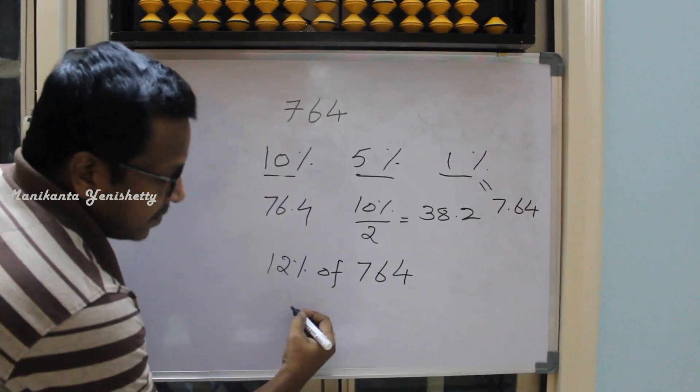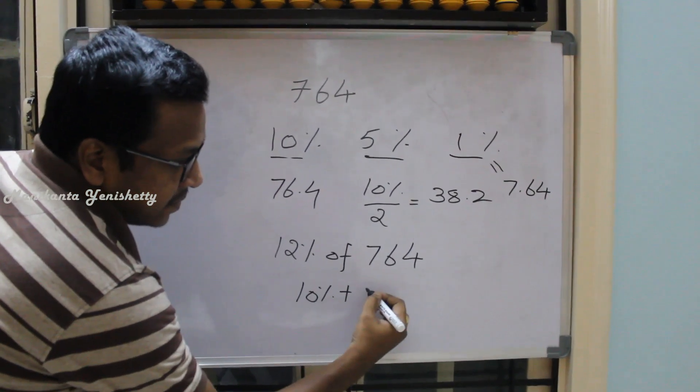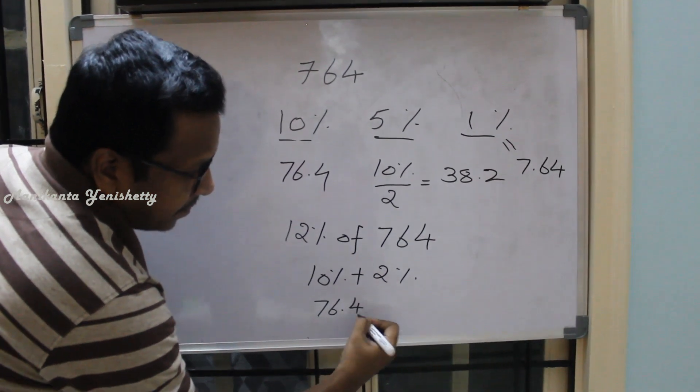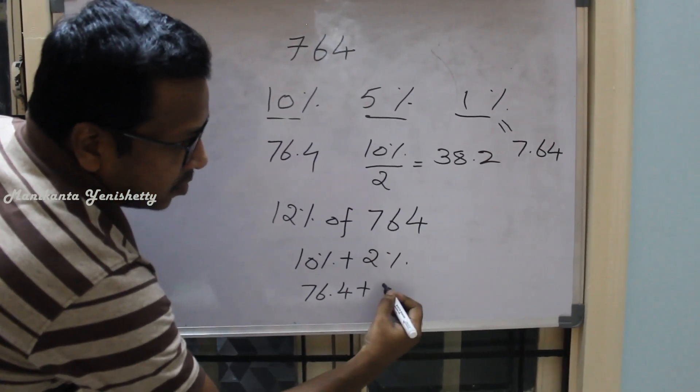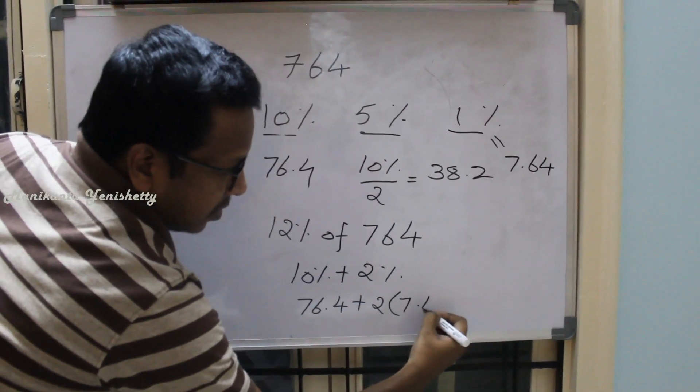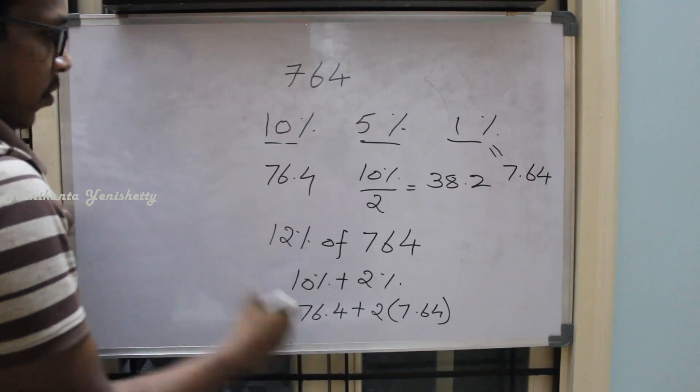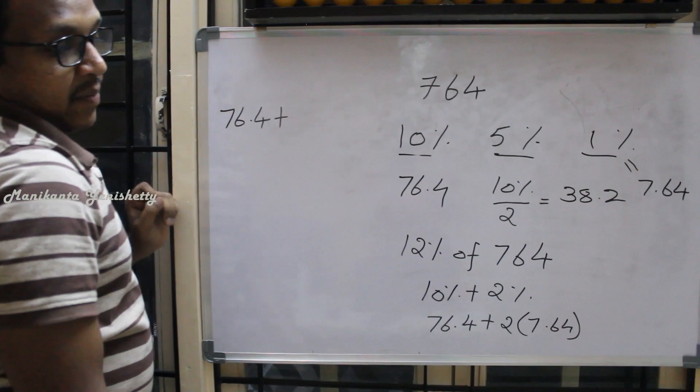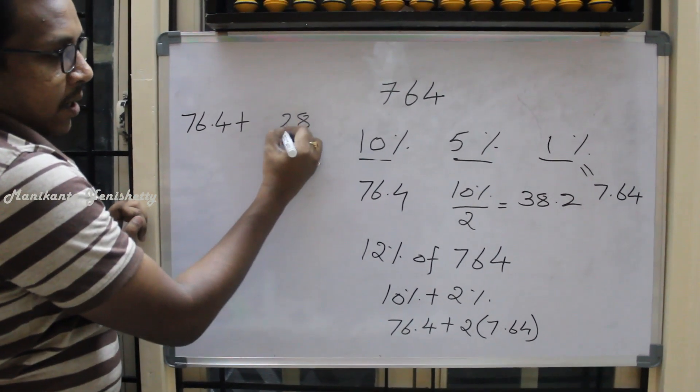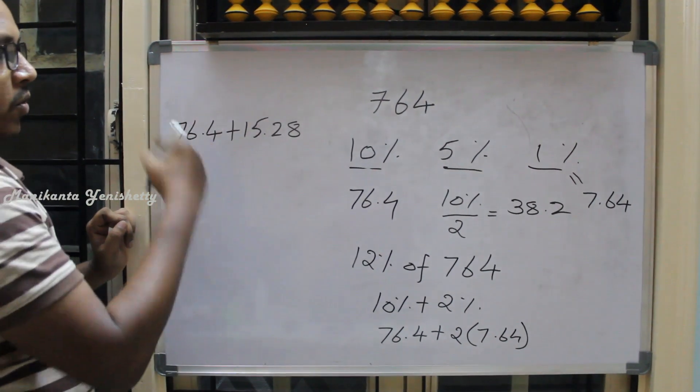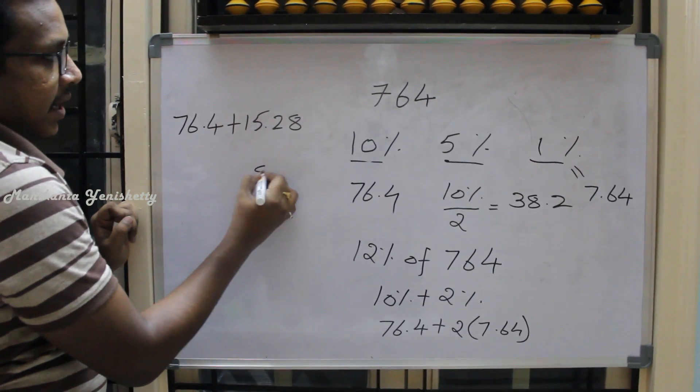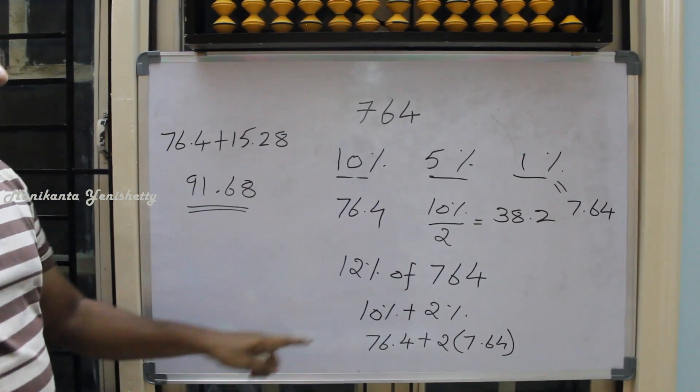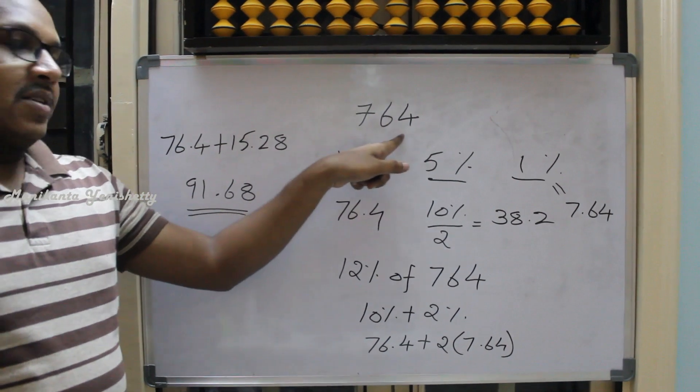12% means 10% plus 2%. 2% is nothing but 2 into 1%. So 76.4 plus 2 into 7.64. Now add this, so it is nothing but 8, 6, 1, 9. 91.68 is nothing but the 12% of 764.